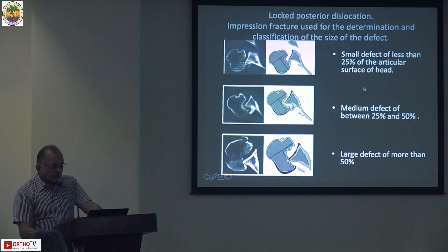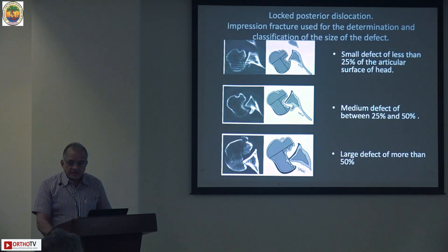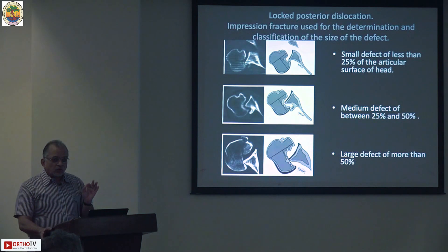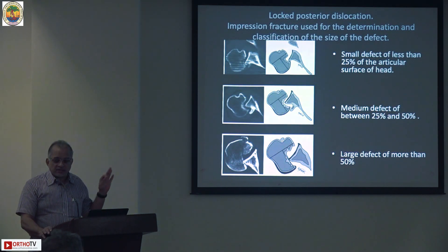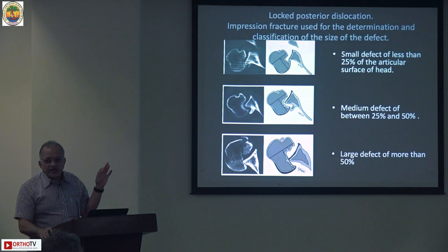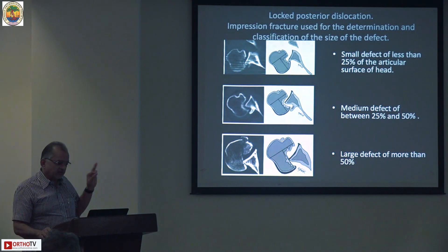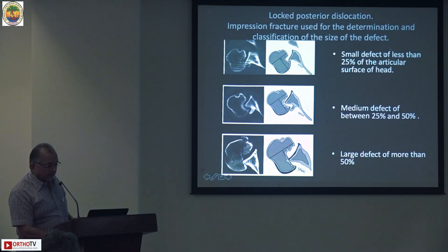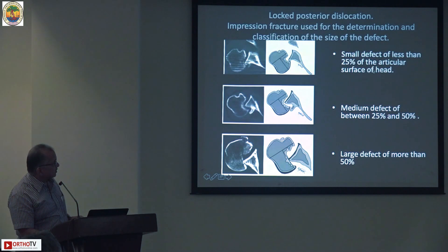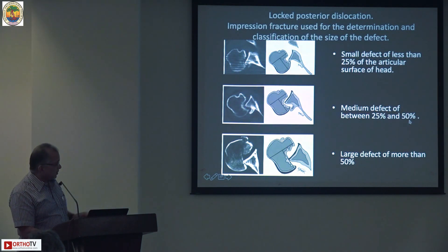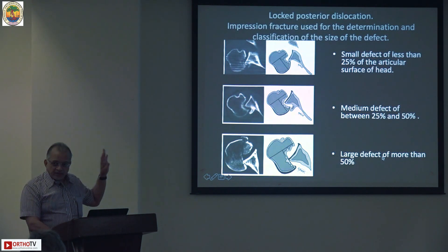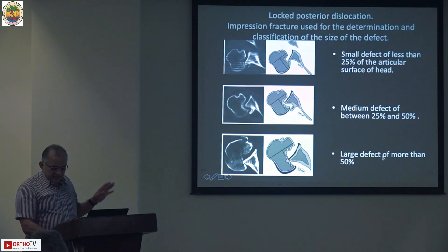Before you treat a patient who has a fracture dislocation, there is a free article by Cicak published in JBJS which you must read - it quantifies the defect. Type 1 has small defects less than 25% of the articular surface of the humeral head; medium defects are 25 to 50%; and larger defects are more than 50%. In each of these three categories the treatment modality is entirely different.